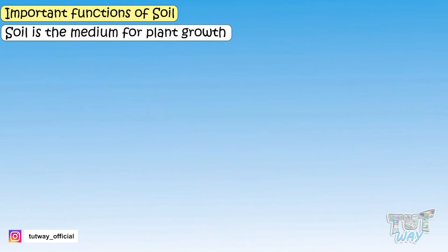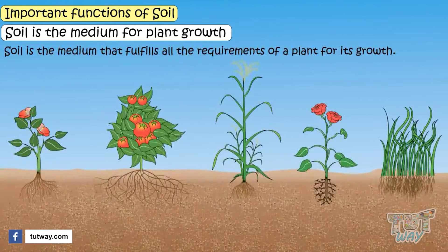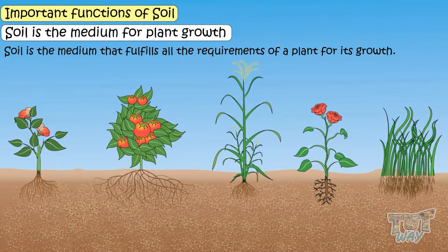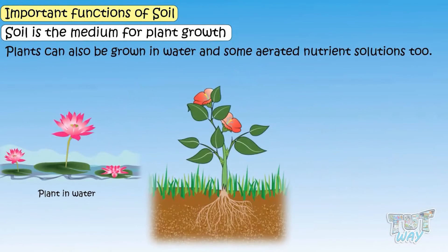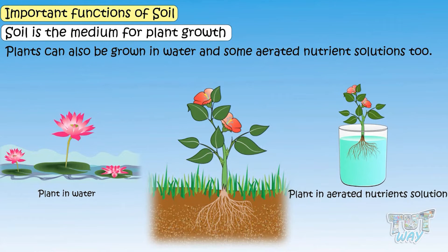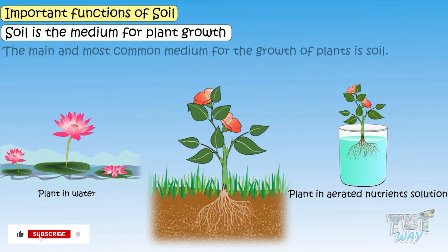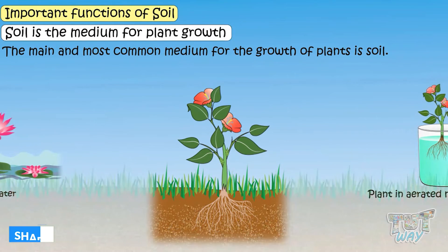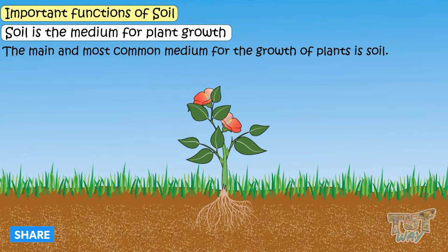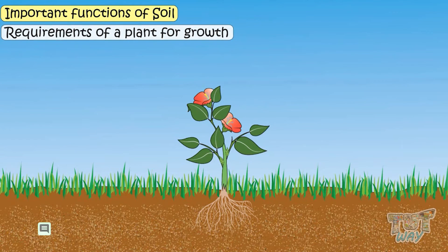Soil is the medium for plant growth. Soil is the medium that fulfills all the requirements of a plant for its growth. There are other mediums too — plants can grow in water and some aerated nutrient solutions — but the main and most common medium for plants to grow is definitely soil.